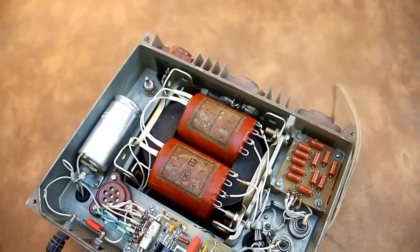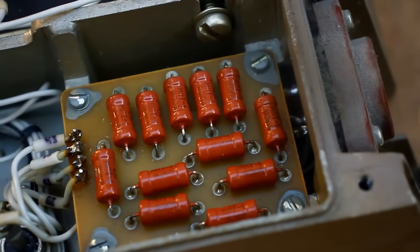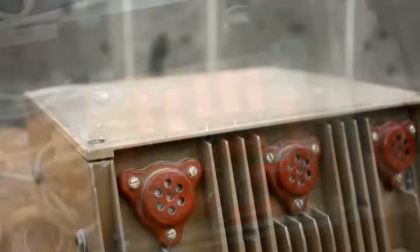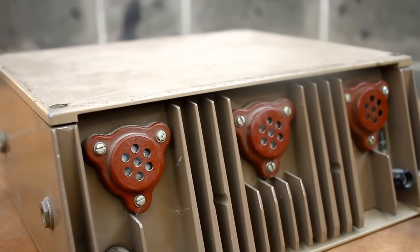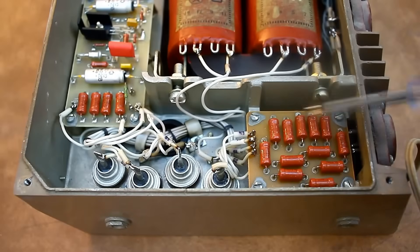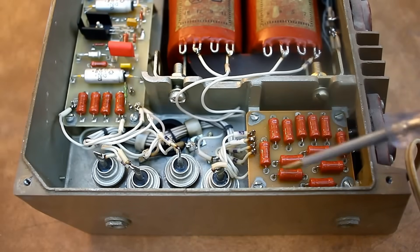Inside, there are two boards. One of them has a bunch of low resistance resistors. The power transistors are connected in parallel to increase the total current. And these resistors are balancing resistors connected in the emitter circuits of the transistors.